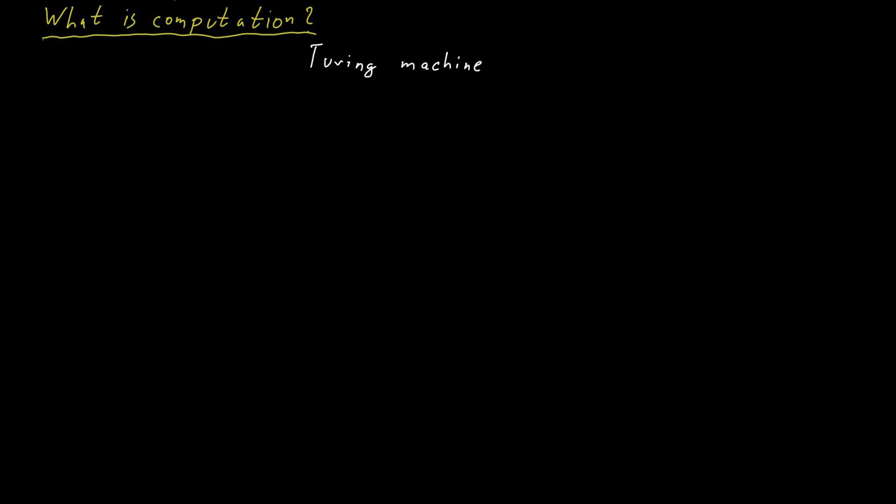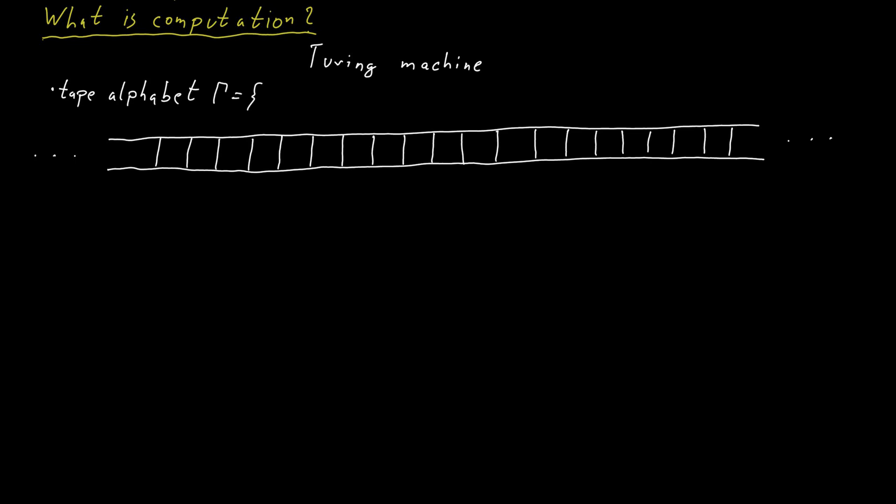For me, a Turing machine consists of a tape. This tape is infinite in both directions, so it's infinite to the left and infinite to the right, and it's divided into cells. In each cell, a symbol is stored from some tape alphabet. The most basic tape alphabet contains three symbols. It only contains 0, 1, and a blank symbol. The blank symbol is this square here, this box.